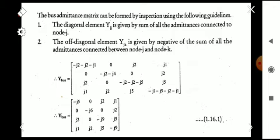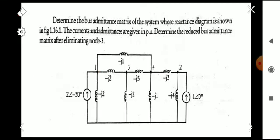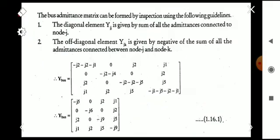For creating the bus admittance matrix, we know the matrix equation: Y11, Y12, Y13, Y14, Y21, Y22, Y23, Y24, and so on. We have to find each and every element. The diagonal elements are given by the sum of all admittances connected to the corresponding bus or node. For node 1, the connected admittances are -j2, -j2, and -j1, so the sum is 2+2+1 = 5, giving Y11 = -j5.